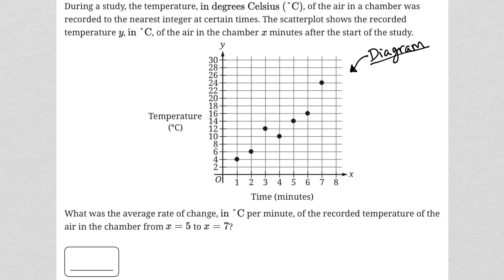So it looks like we have a graph, obviously a scatterplot. Our x-axis is time, so we're between zero and eight minutes. Our y-axis is temperature in degrees Celsius, so we're from zero to 30 degrees.